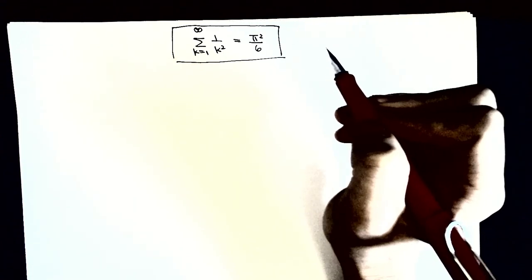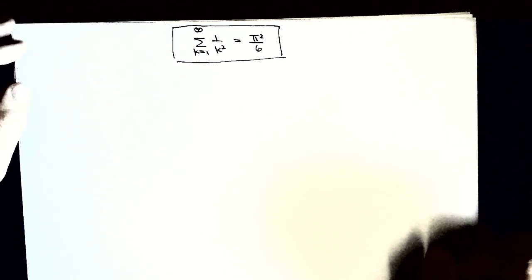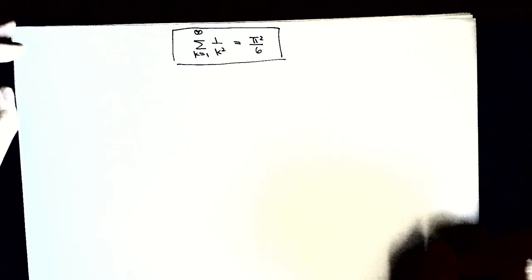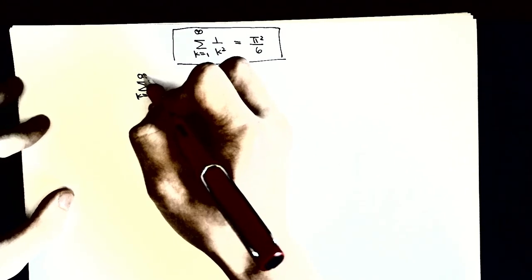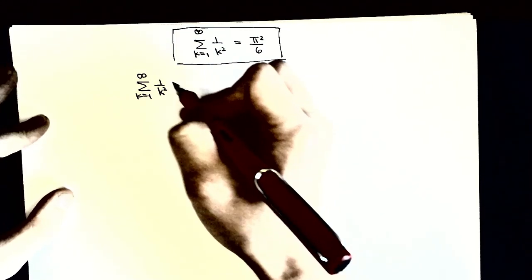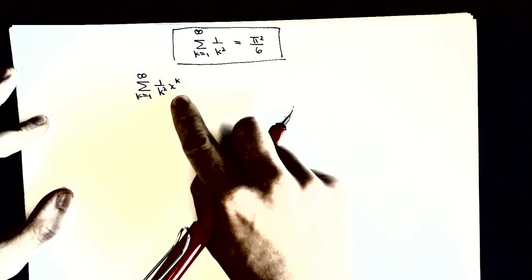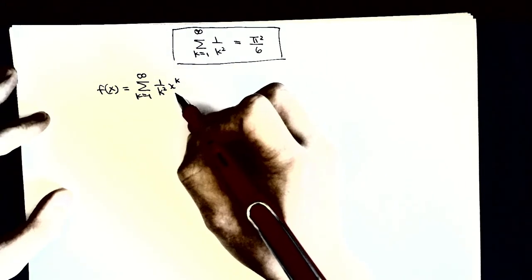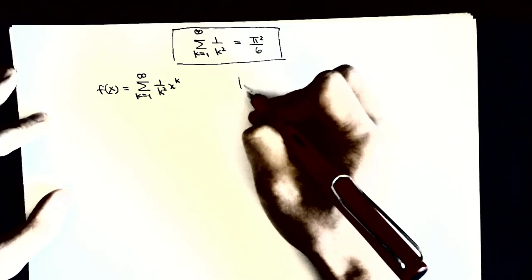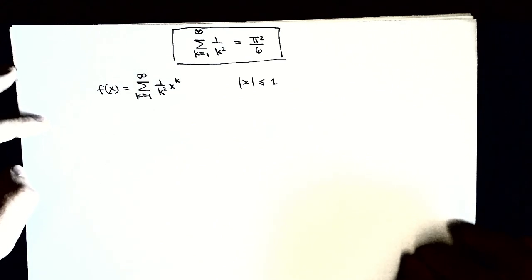Today we will use a very interesting method to derive this result. We will require a little bit of knowledge about complex numbers, and a very simple idea on differentiation under the integral sign. We will consider this more challenging problem: we attach x here so that this becomes a function, so we name it f(x). We know from the infinite series this function is actually defined when the modulus of x is less than or equal to 1.